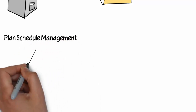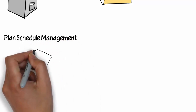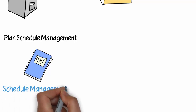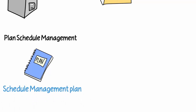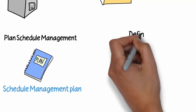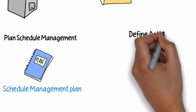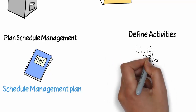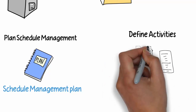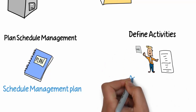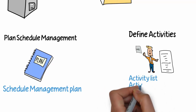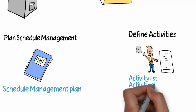We have the Plan Schedule Management process, which as an output should obviously be our schedule management plan — essentially how we're going to manage these activities within time management as a project. We also have to take the work breakdown structure that we've been working on in scope management and define the activities further.